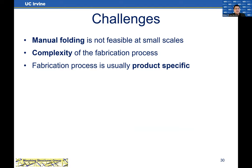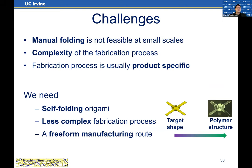There are different challenges when manufacturing at smaller scales. Unlike folding paper, we cannot do manual folding at millimeter scales. The fabrication process can be very complex, and in the literature fabrication is often product-specific. Our approach uses self-folding origami — the structure folds itself without us manually applying forces. This allows a less complex fabrication process, and we want to create a freeform manufacturing route.